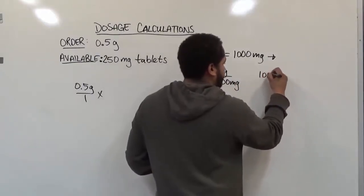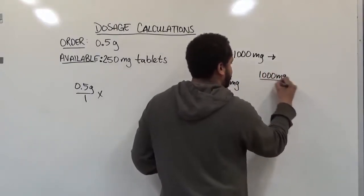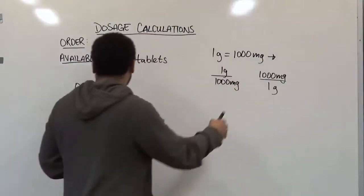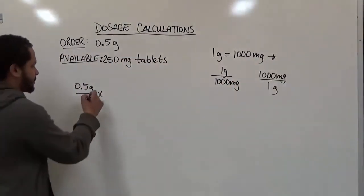Vice versa, we have 1,000 milligrams to every 1 gram. Depending which way you're converting in the problem, we can use it either way.